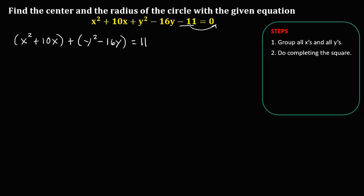Then do completing the square. For x, take the coefficient of x, so that's 10. Then divide by 2 and take the square: 10 divided by 2 is 5, and 5 squared is 25.